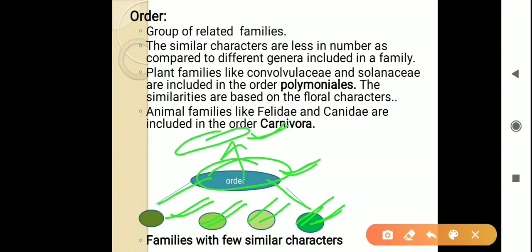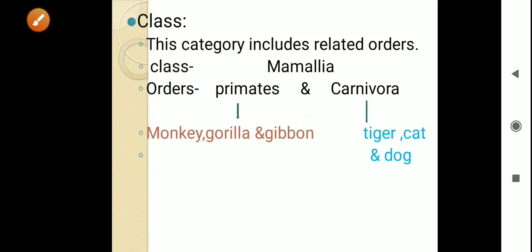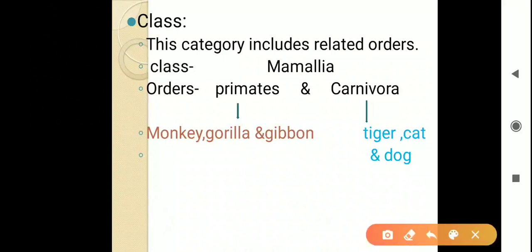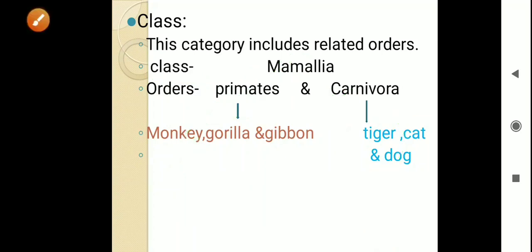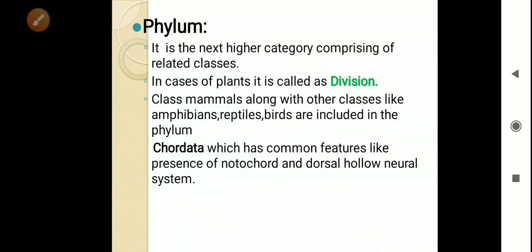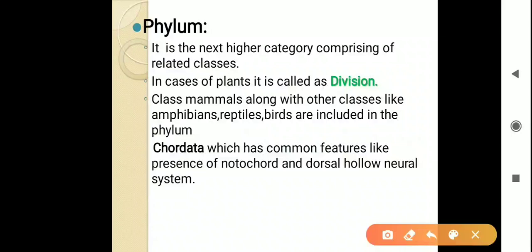At the species, genus, and family levels cats and dogs are different, but at the order level they are the same. Now comes class — this category includes related orders. For example, class Mammalia includes the order Primates (which includes us, monkeys, gorillas, gibbons) and Carnivora (tigers, cats, dogs) — all are mammals that have mammary glands. As we go from lower to higher, differences keep increasing, similarities keep decreasing, but the rank keeps getting higher.